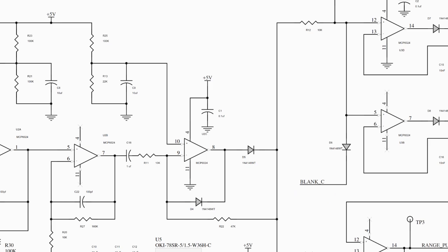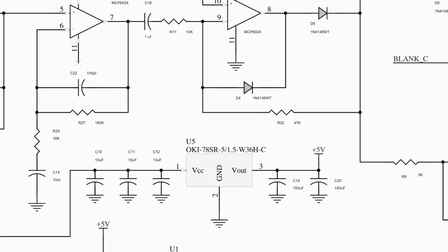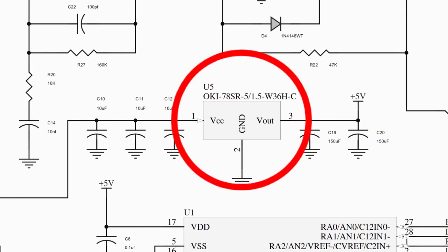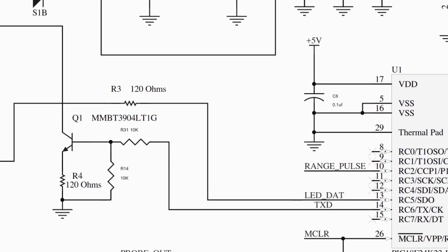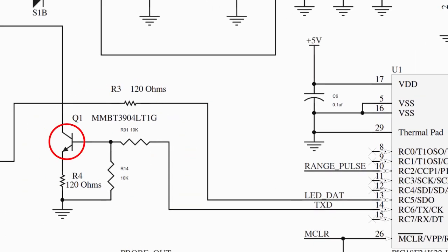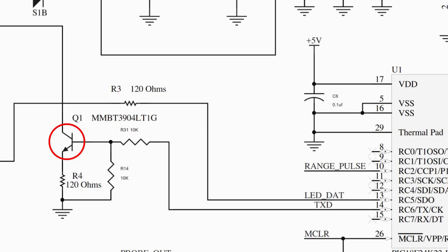The remaining circuitry consists of U5 which is a simple switch mode regulator that takes the 24 volt input and makes 5 volts out of it.